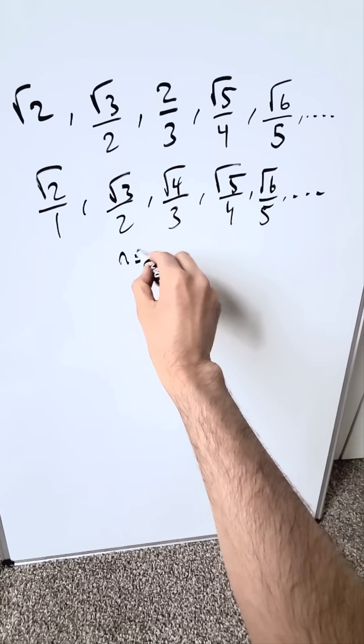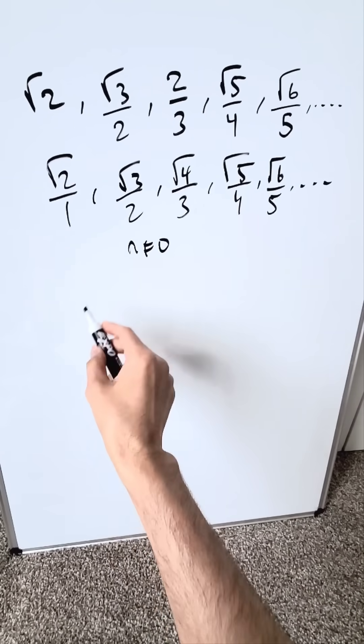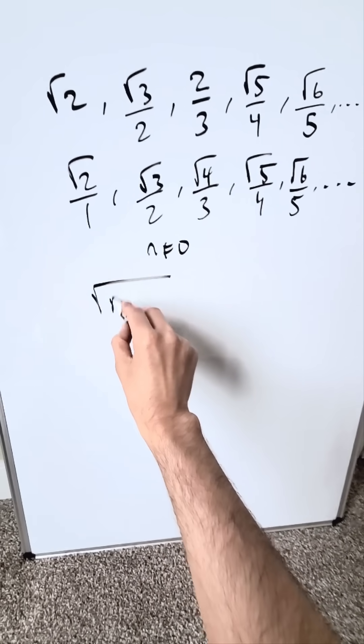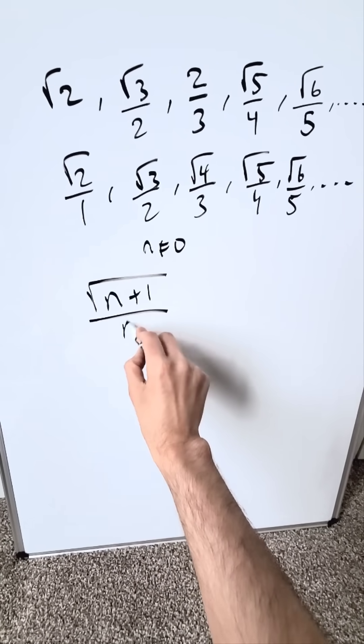N cannot equal 0, otherwise you would zero out the denominator. I am looking here at a rule which develops as such: root N plus 1 over N.